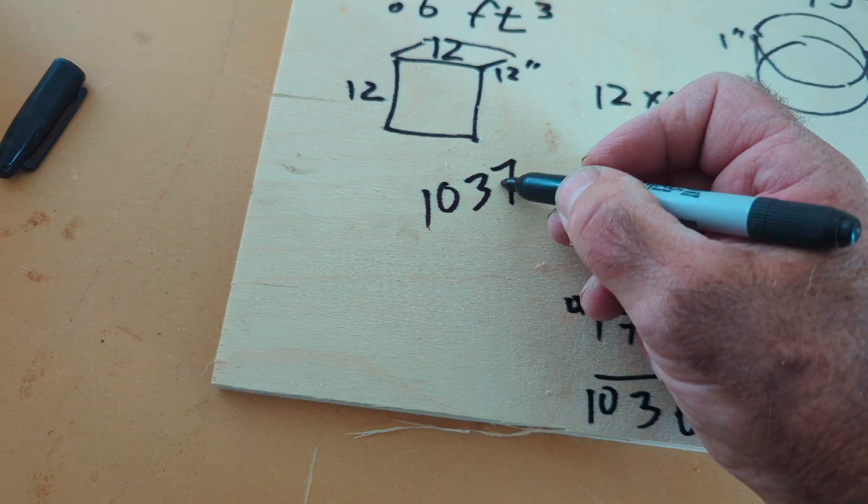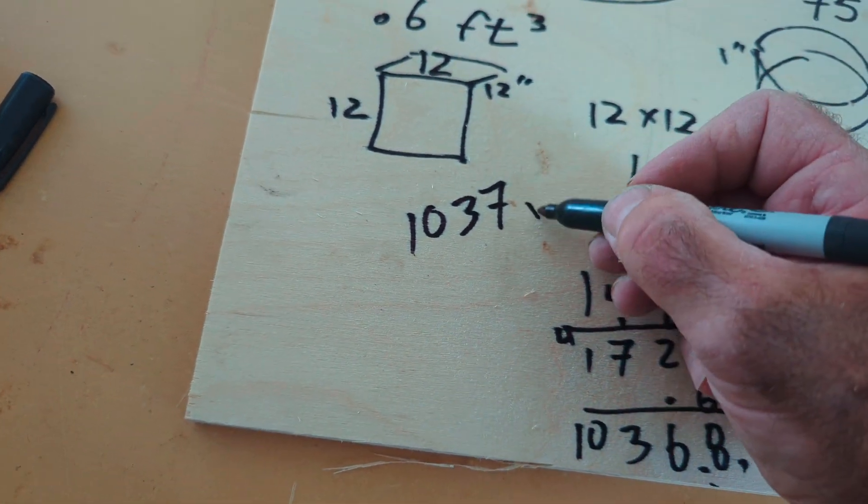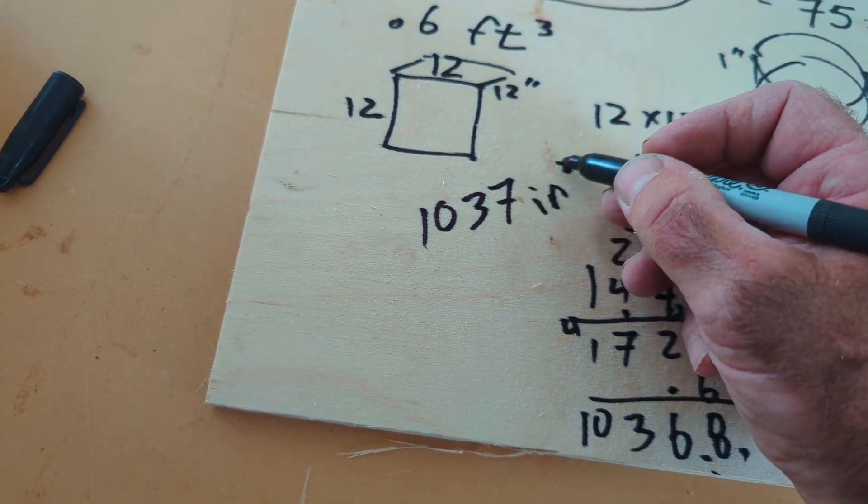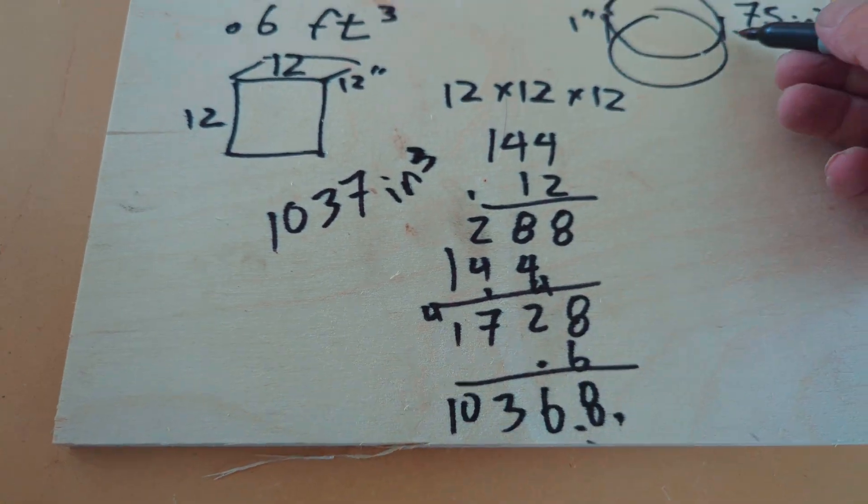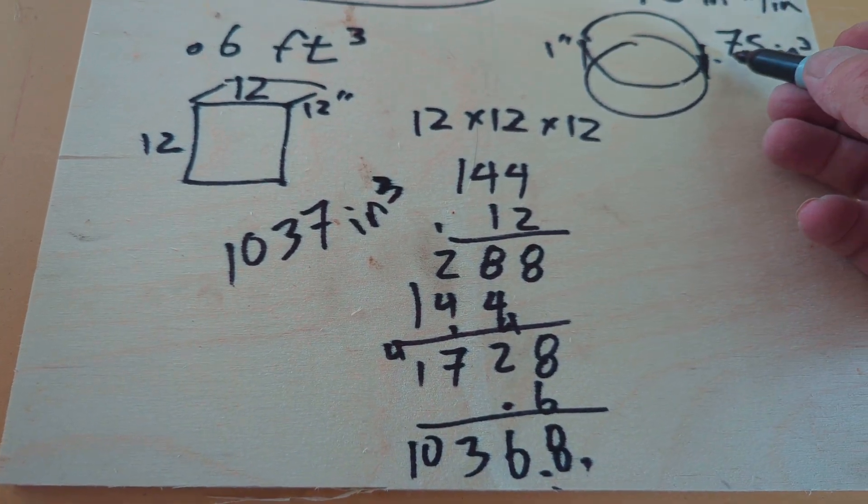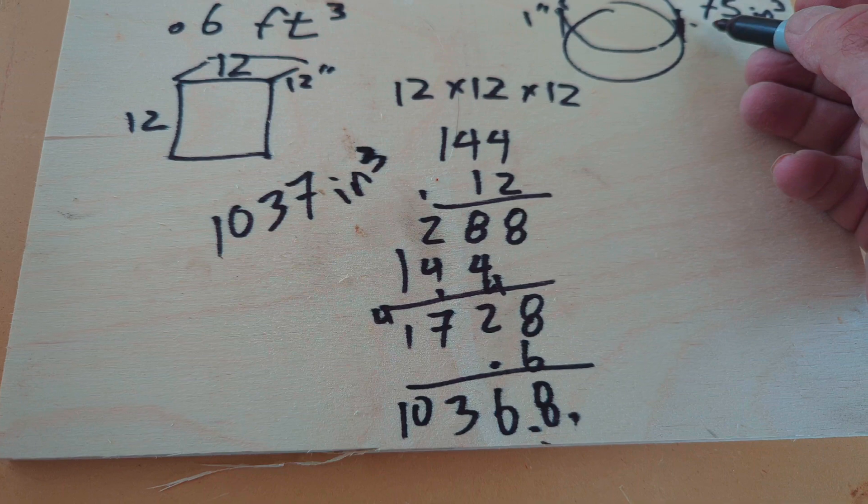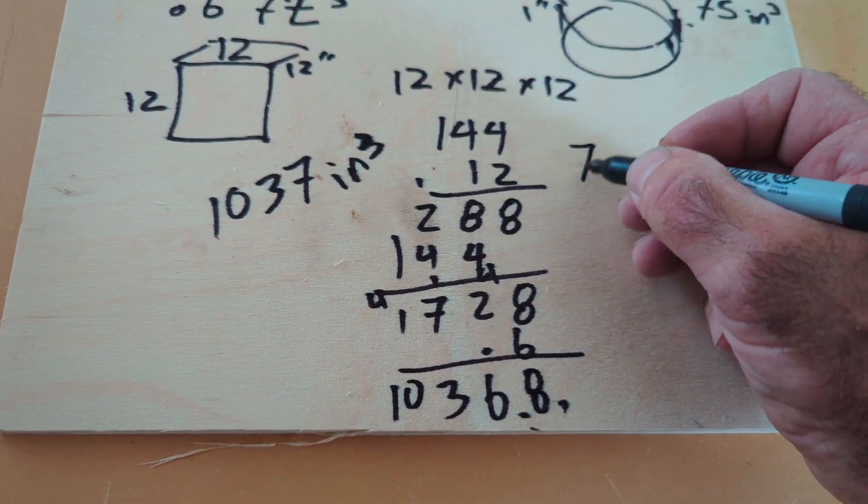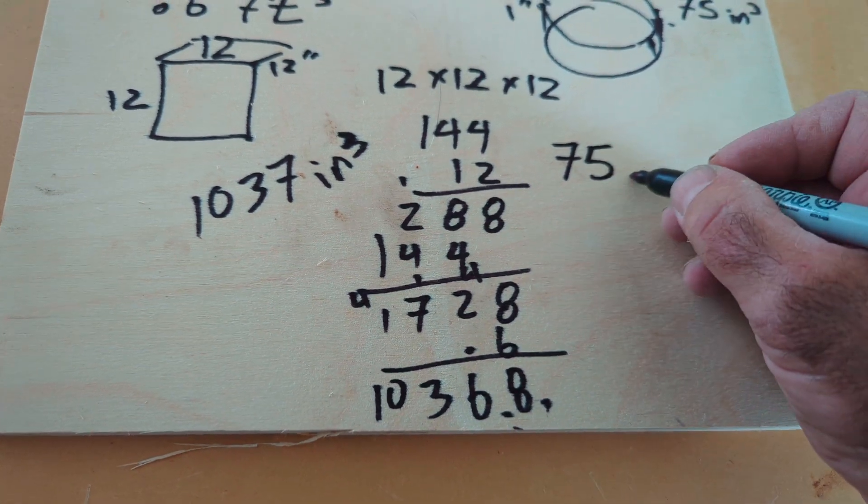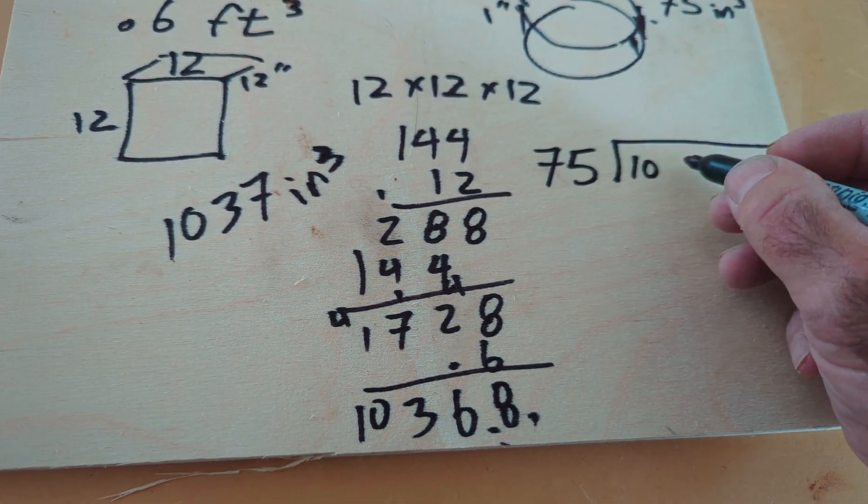So that's going to, one bag is going to make 1037 cubic inches, right? 1037 cubic inches. One inch of this is 75. So we're going to do 75 into 1037.